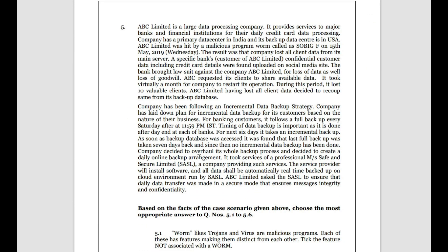Case Study 5: ABC Limited is a large data processing company providing services to major banks and financial institutions for daily credit card processing. The company has a primary data center in India and a backup center in the USA. On 15th May 2019 (Wednesday), ABC Limited was hit by a malicious program — a worm called 'So Big F.' As a result, the company lost all client data from its main server. A specific bank's confidential customer data, including credit card details, was found uploaded on social media. The bank brought a lawsuit against the company for loss of data and goodwill.